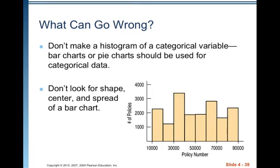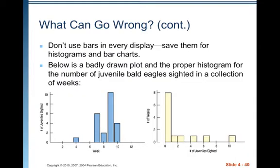What can go wrong? Don't make a histogram of a categorical variable — bar charts or pie charts should be used for categorical data. Don't look for shape, center, and spread of a bar chart. Don't use bars in every display; save them for histograms and bar charts. Below is a badly drawn plot and the proper histogram for the number of juvenile bald eagles cited in a collection of weeks.